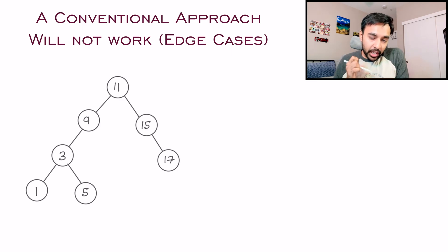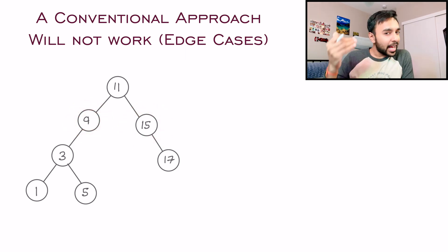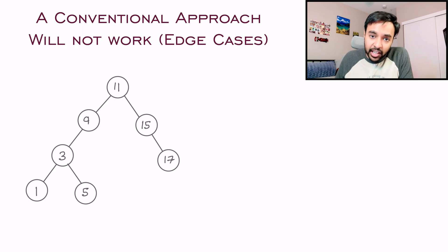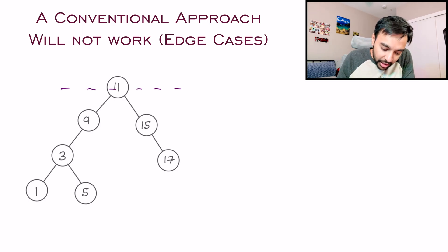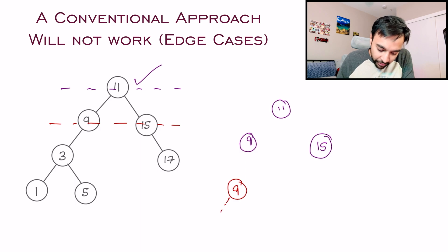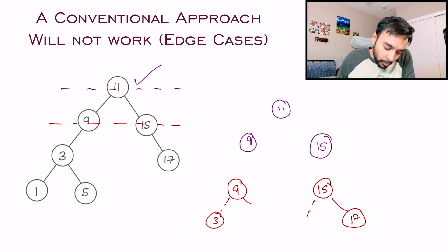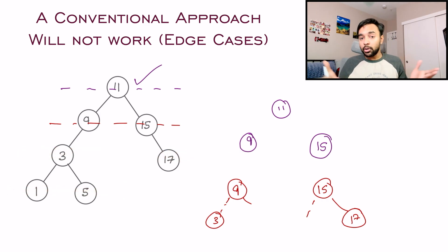Why is that so? You might feel that what you can do is start doing one level at a time, and then for every node that you encounter, check if the left node is smaller and the right node is larger. If this is true for every node, it should be a binary search tree. So you start traversing, you see the value eleven, and then you see that nine is on the left and that is smaller, fifteen is on the right and that is larger — so this satisfies your criteria. Now you move on to the second level. You see node nine, and on the left you see node three which is smaller. On the right you have nothing. Then you see node fifteen, on the left you have nothing, and on the right you have seventeen which is larger. So with level order traversal you could say this tree was a binary search tree.